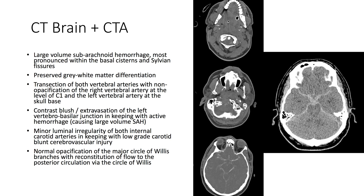The left vertebral artery is non-opacified at the skull base. There is contrast blush extravasation at the left vertebral-basilar junction, in keeping with active hemorrhage causing the large volume subarachnoid hemorrhage. There is also minor luminal irregularity of both internal carotid arteries, in keeping with low-grade carotid blunt cerebrovascular injury.